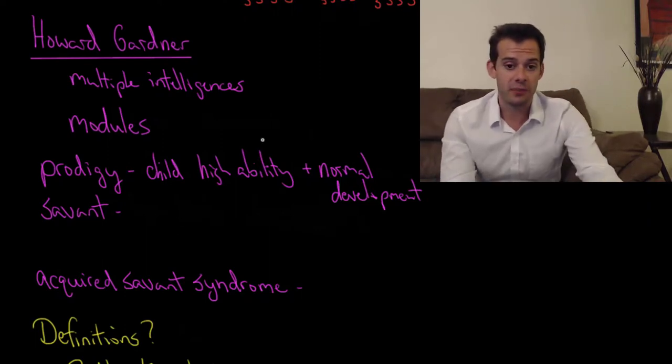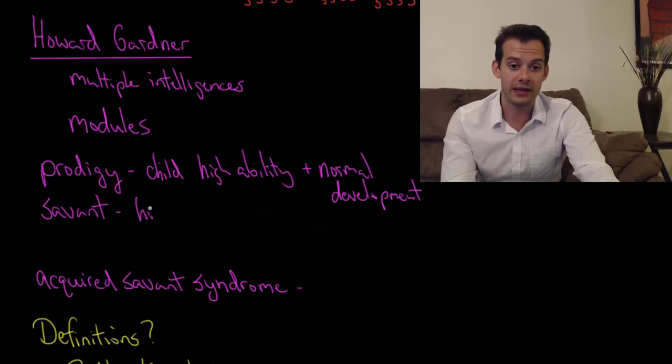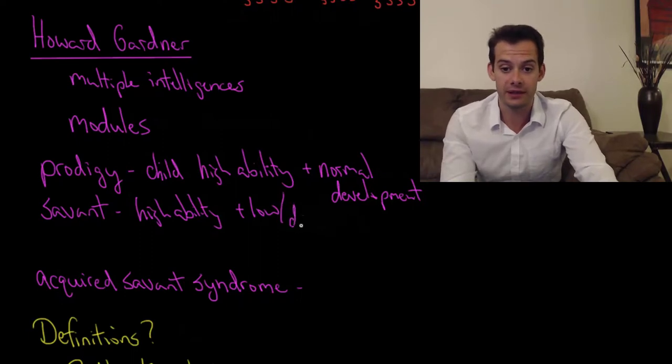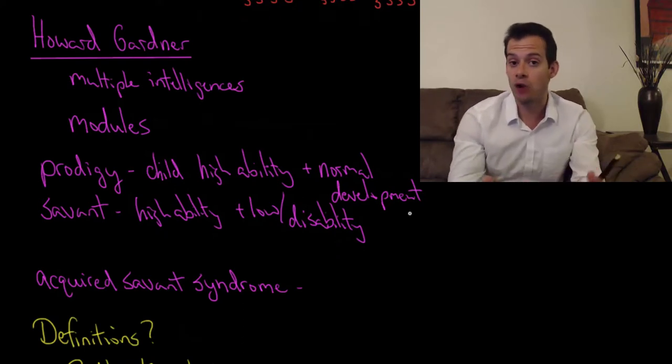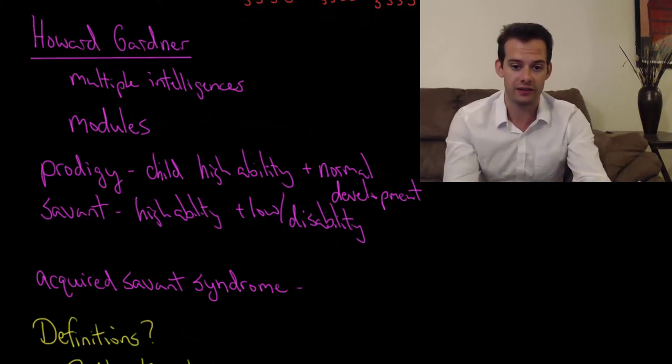We also have the case of savants. A savant is a person who has high ability in one area, but this is accompanied by low or even disability in other areas.